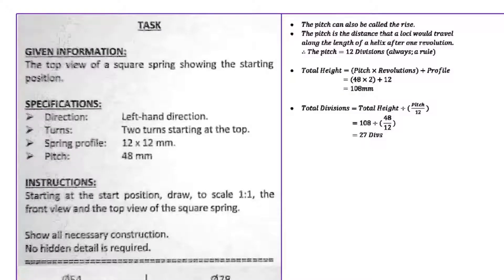For today's drawing on page 94 it's a helix again. It reads: the top view of a square spring, so that's our first key point — it's a square spring showing the starting position.